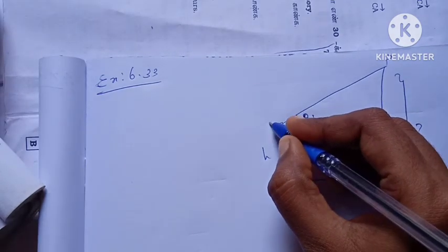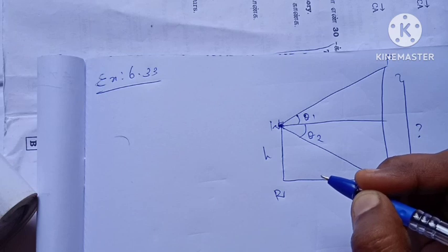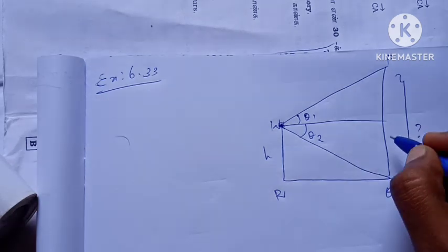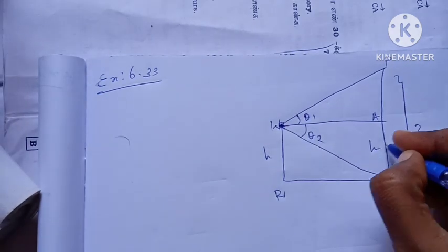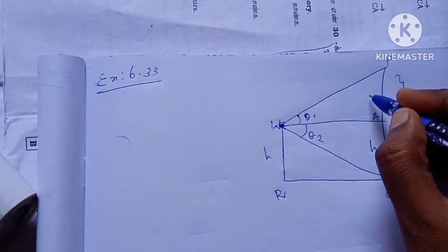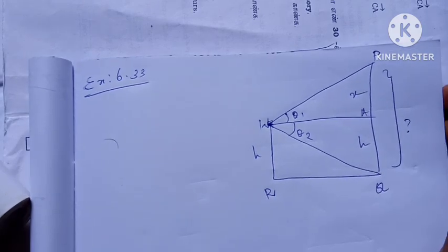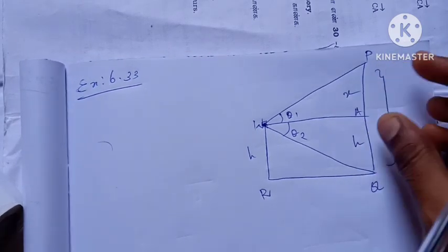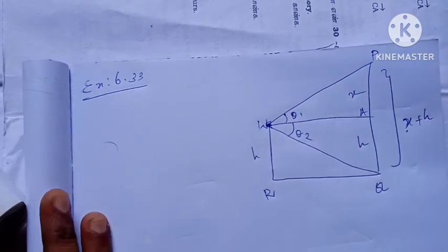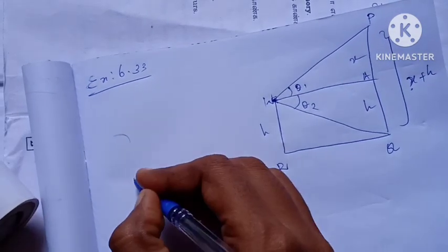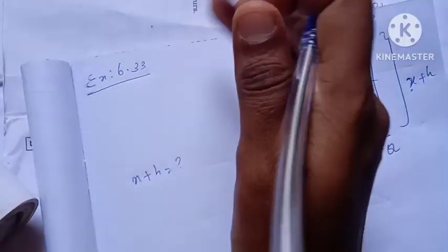The window is labeled W, this point is R, and this point is E. This is H, this is H. What is X? X is this value here. Now we have to find out: X plus H is what we will find.